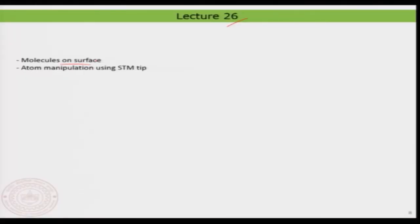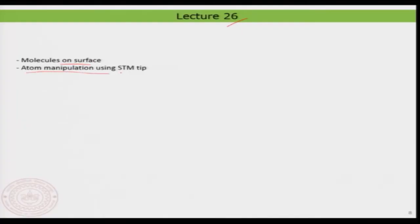Hello everyone, welcome back. In this lecture 26, we will continue a little bit more on molecules on surface. We have already seen a couple of examples, but I will show you a few more examples, look at what happens at the interface, and also when you grow thicker layers. Then we will get into a new prospect of surface science — atom manipulation using scanning tunneling microscopy. This is a very interesting topic we will cover within this lecture.